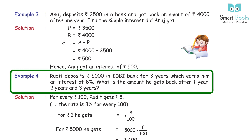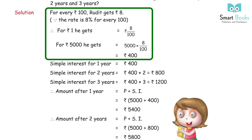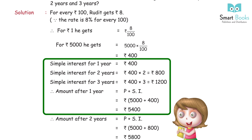Example 4: Rudit deposits Rs 5,000 in IDBI bank for 3 years, which earns him interest at 8%. What is the amount he gets back after 1 year, 2 years, and 3 years? Solution: For every Rs 100, Rudit gets Rs 8. For Rs 5,000, he gets 5,000 × 8 ÷ 100 = Rs 400. Simple interest for 1 year = Rs 400. Simple interest for 2 years = Rs 400 × 2 = Rs 800.